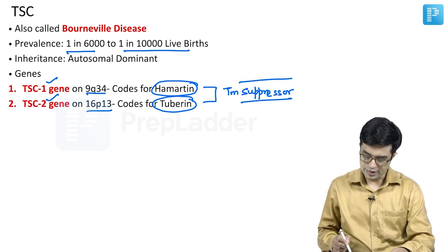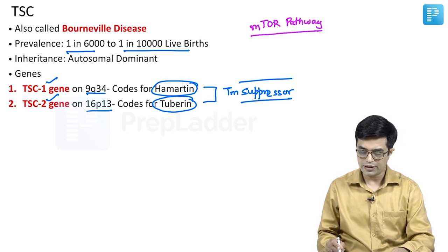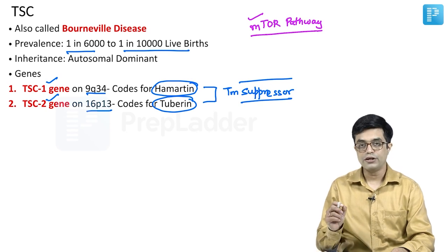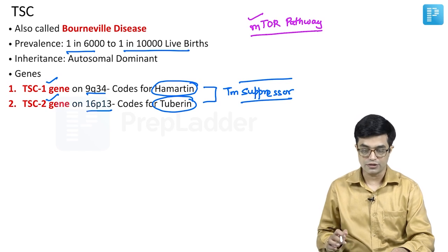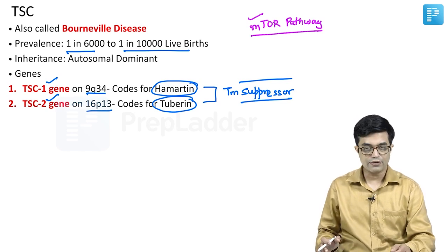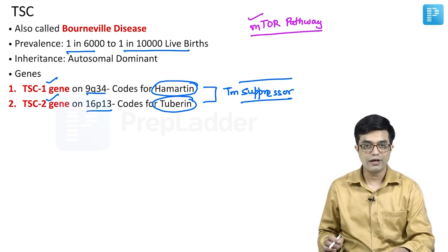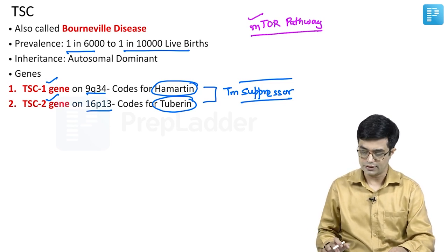Normally, hamartin and tuberin keep the mTOR pathway in regulation. This pathway is involved in cellular growth, cell differentiation, as well as neuronal plasticity. Whenever there is a deficiency of either hamartin or tuberin, the mTOR pathway becomes dysregulated, producing the manifestations. As a result, you will have cysts forming and benign tumors forming, with CNS involvement as a hallmark of the disease.